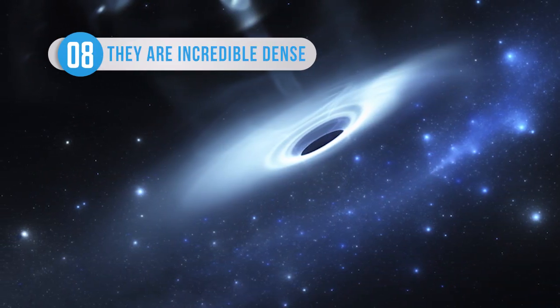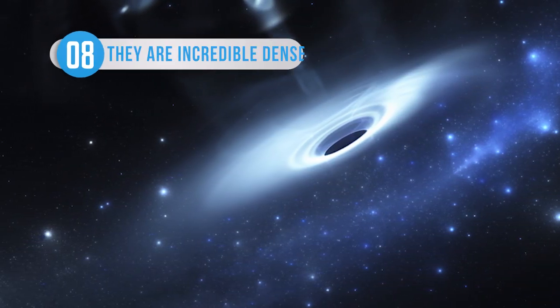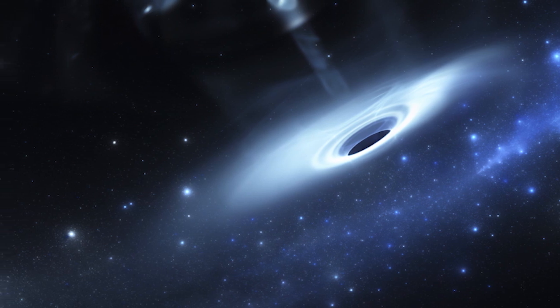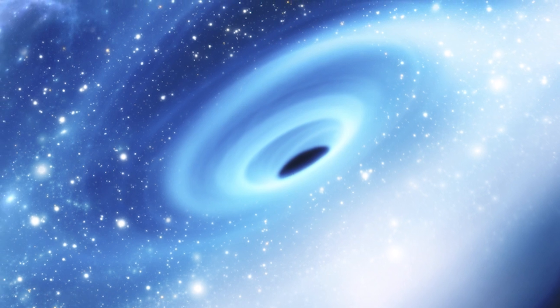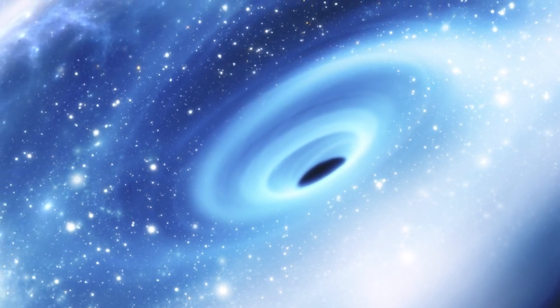Black holes hold a massive amount of mass in an incredibly small space. As an example, to make a black hole with a mass of Earth, the entire planet would need to be squashed down to a space of 9mm across. Some supermassive black holes in the center of galaxies could have a mass of 10 to 30 million times that of our Sun.